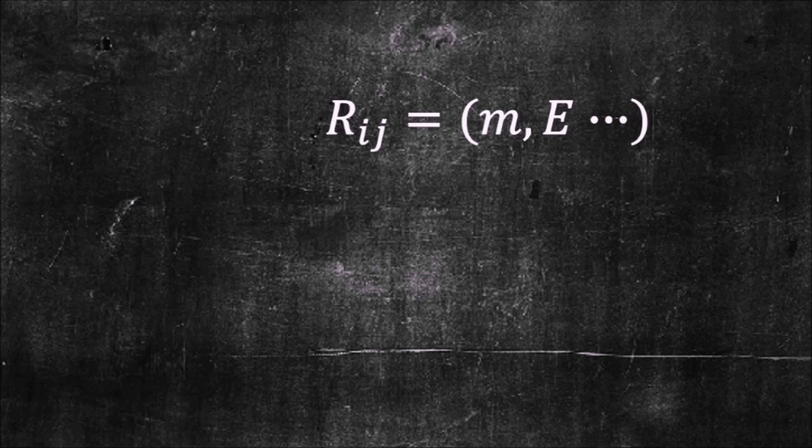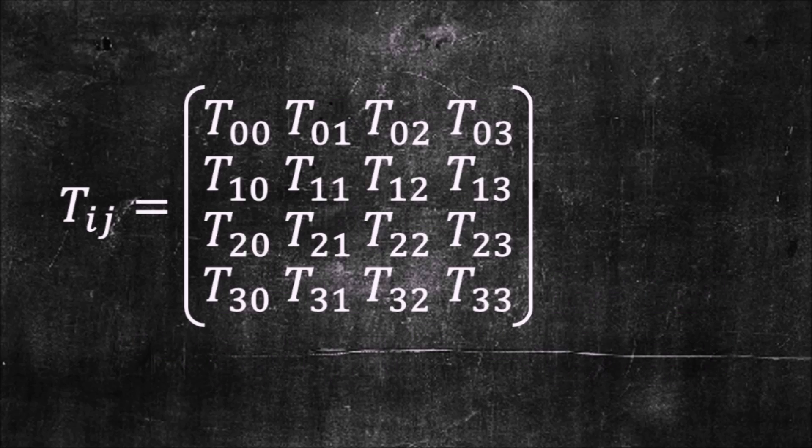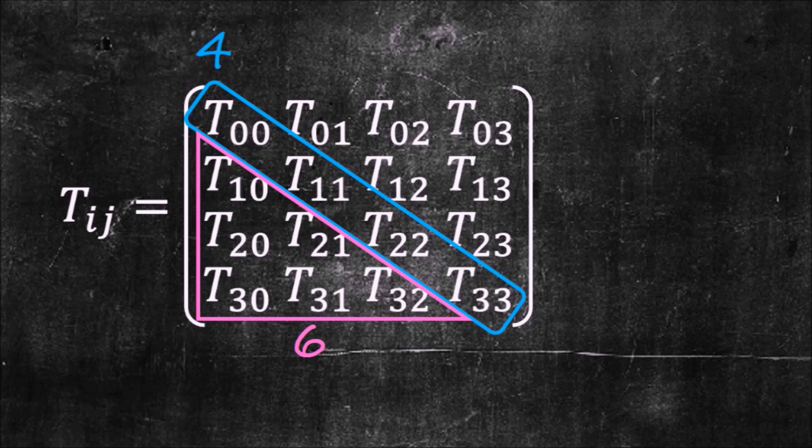Furthermore, this something must be a tensor of rank 2, meaning a tensor with two indices, and it must be a covariant tensor. Otherwise the two sides would not transform the same way, and therefore they could not be equated. Also, the tensor must be symmetric, just like the Ricci tensor, which means that the number of entries will be at most 10.